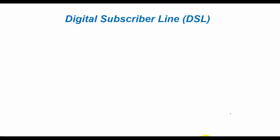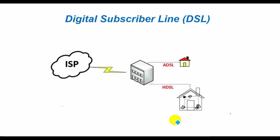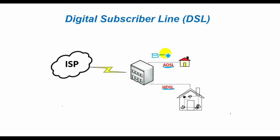For DSL services, two types of system exist: Asymmetric Digital Subscriber Line, or ADSL, and High-rate Digital Subscriber Line, or HDSL. ADSL provides a high data rate in only one direction — it enables fast download speeds but significantly slower upload speeds.